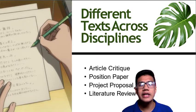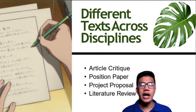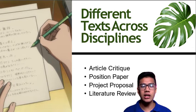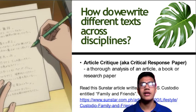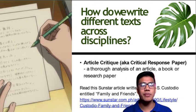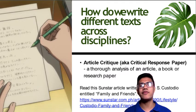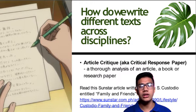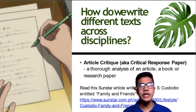Here are the different texts across the disciplines: number one, the article critique; number two, position paper; number three, project proposal; and finally, the literature review. An article critique, also called a critical response paper, is a thorough analysis of an article, book, or research paper. For example, we have an article called 'Family and Friends' in the SunStar newspaper.